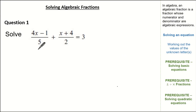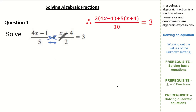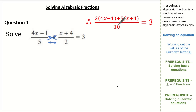Let's start by writing the two fractions as a single fraction using the cross multiply method. Working this out, we have 2 multiplied by our (4x minus 1), indicated here, plus 5 multiplied by (x plus 4), indicated here, and 5 multiplied by 2 which gives us 10. It still equals 3. Now let's expand.